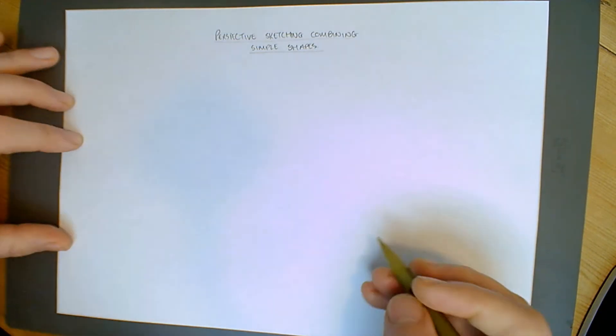We're going to now have a look at creating some perspective sketches where we're actually combining shapes. So we're using one cuboid to create shapes initially and then adding features onto that by adding shapes to them.